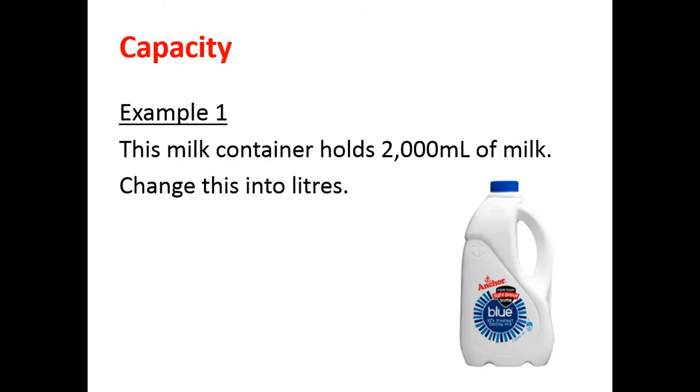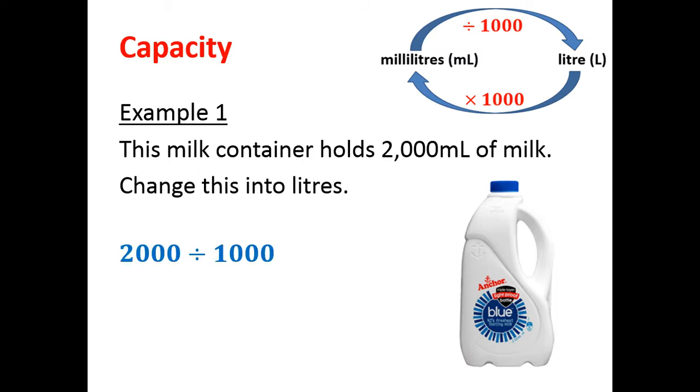Let's get into some examples. Example number 1. This milk container holds 2,000 milliliters of milk. Change this into litres. We're changing milliliters into litres, so we need to divide by 1,000. So 2,000 divided by 1,000 makes 2 litres. This is a 2 litre milk bottle.